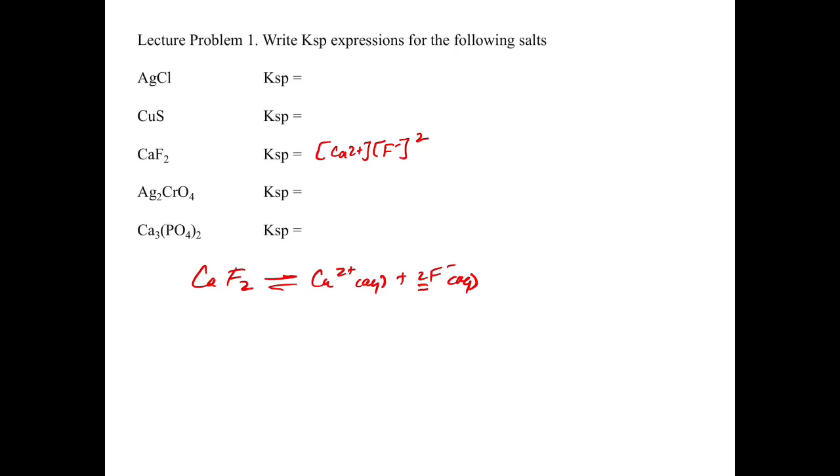If we look at another slightly more complicated one like calcium phosphate, we have Ca3(PO4)2. In this case, we're going to have 3 Ca2+ plus 2PO4 3- (aq).